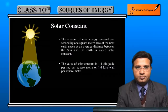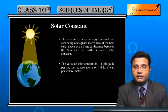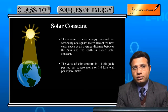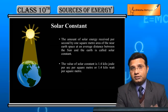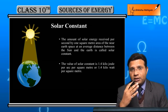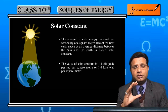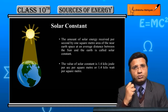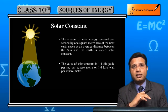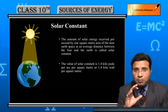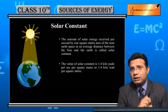Now students, we will learn about the term 'solar constant'. As you know, the energy from the sun first passes through Earth's atmosphere. About half of that energy is absorbed by the atmosphere. After that, the remaining part of the sun's energy falls on Earth's surface.